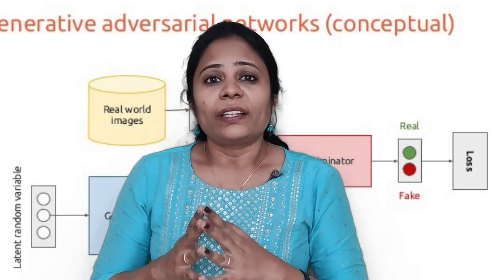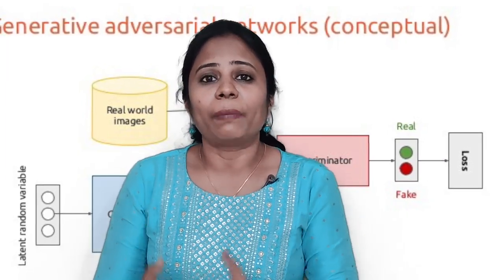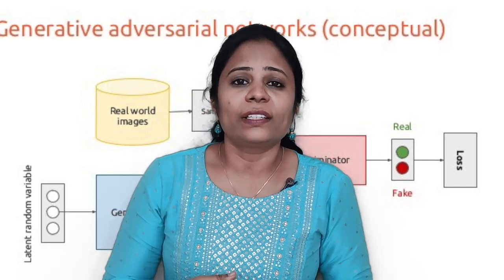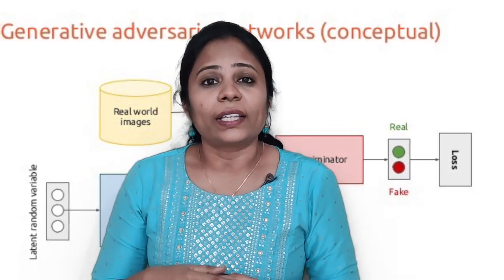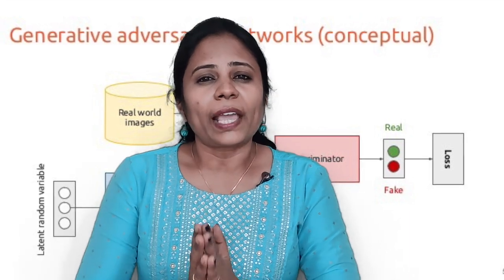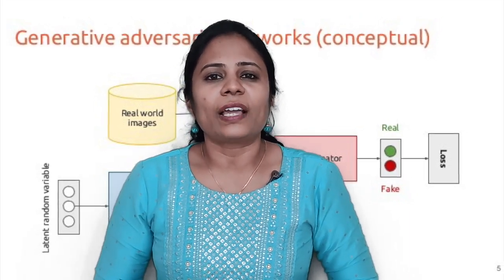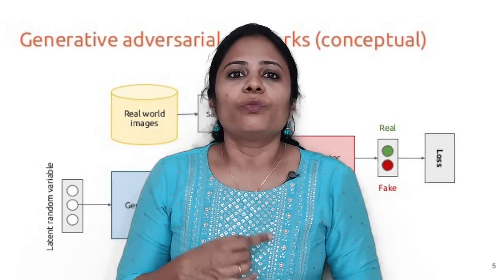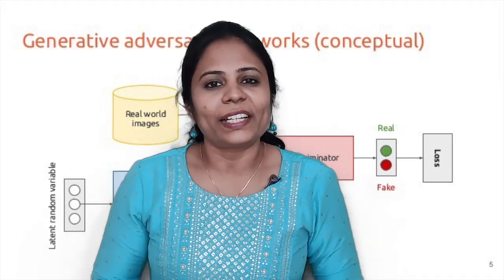The discriminator has to distinguish between the real images and the synthesized images. Here comes the tricky part: when the discriminator identifies them correctly, we back-propagate the weights and send that information back to the generator. The generator then recomputes and tries to make the images as realistic as possible. This works in a loop — at last, the generator produces images so close to real that the discriminator can no longer distinguish them. That's how realistic synthesized animations are created.